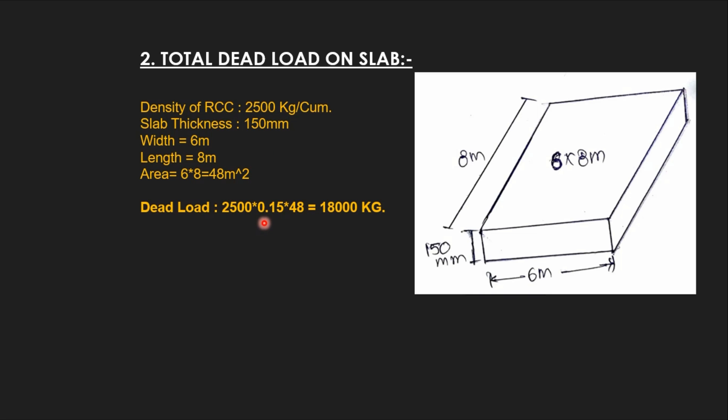Volume is multiplied by density, which gives us mass. So total dead load equals 2500 multiplied by 0.15 multiplied by 48, which equals 18,000 kg.